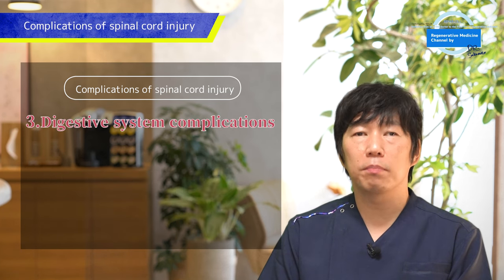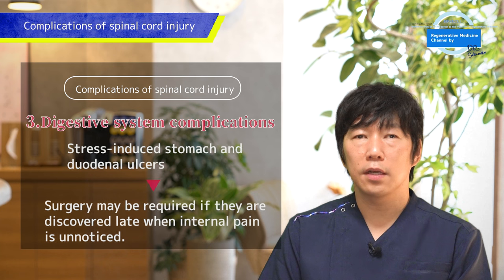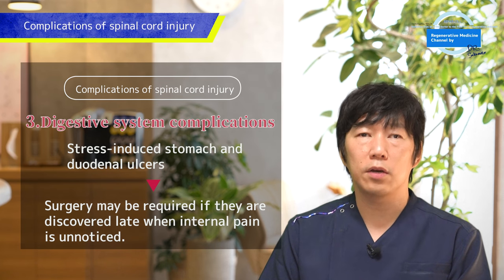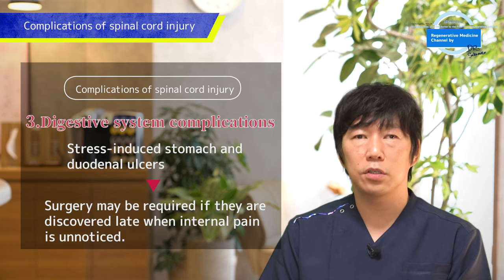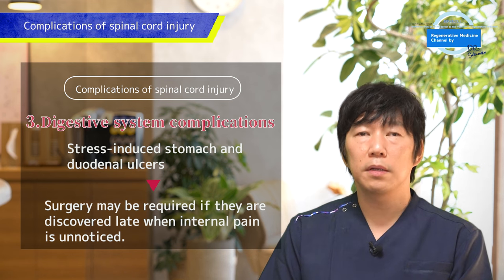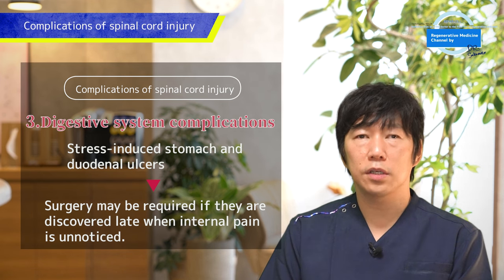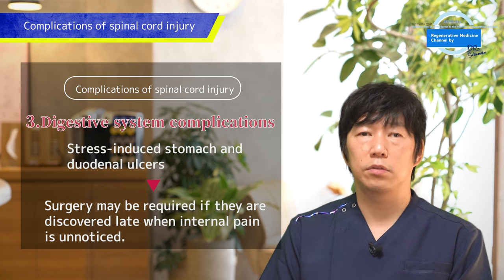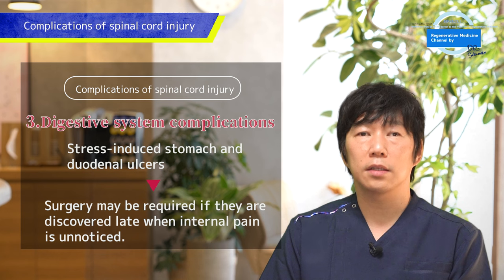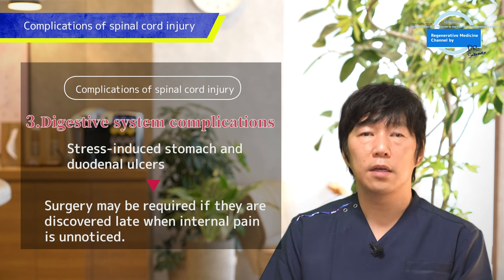The third complication is digestive issues, involving conditions like gastric or duodenal ulcers, where holes can form in the stomach or intestines due to stress during the acute phase of injury. While these ulcers normally cause significant abdominal pain, people with spinal cord injuries may not feel the pain until it's too late, potentially requiring surgery due to internal bleeding.